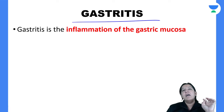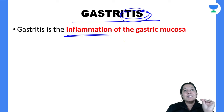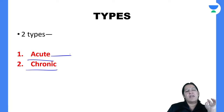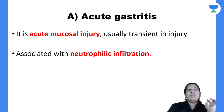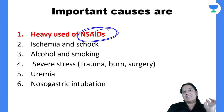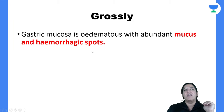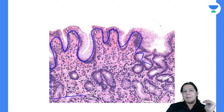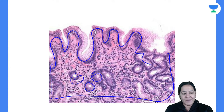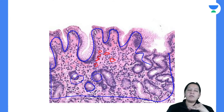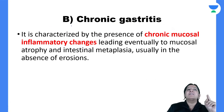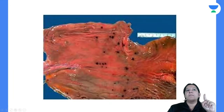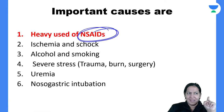Gastritis is inflammation of the gastric mucosa — itis means inflammation. There is no ulcer here, just inflammation. Inflammation is of two types: acute and chronic. In acute, there are neutrophils; in chronic, there are lymphocytes. In acute gastritis, the most common cause is NSAIDs — too many painkillers cause acute mucosal injury with neutrophilic infiltration between the glands filling the entire wall. Acute is not very important for exams.